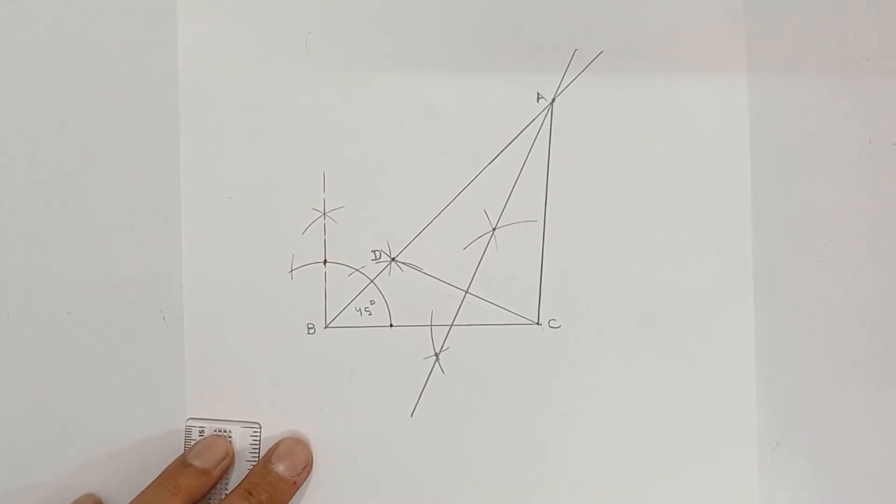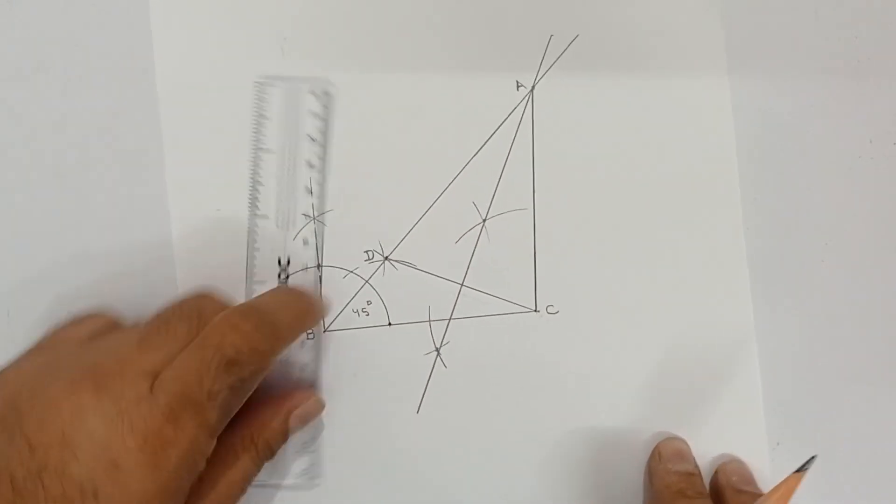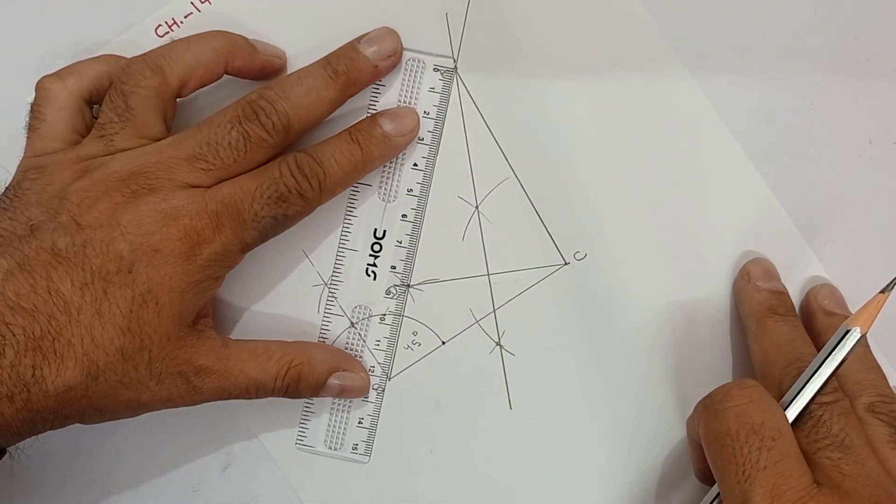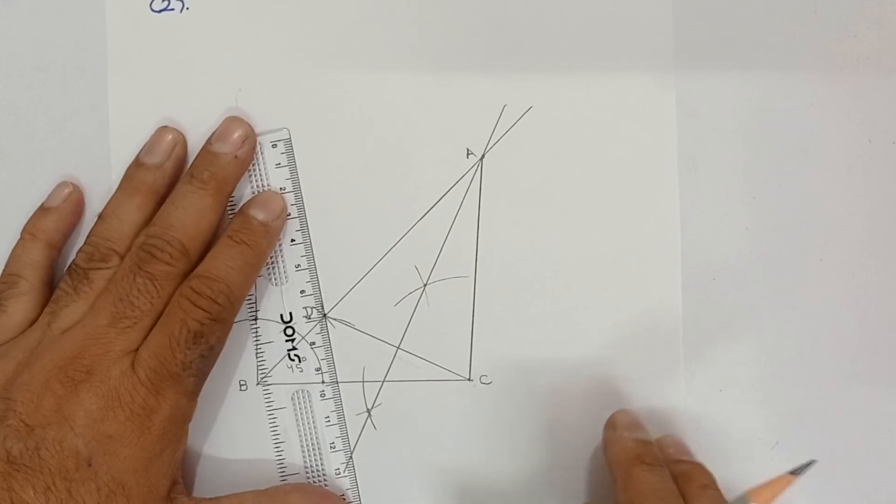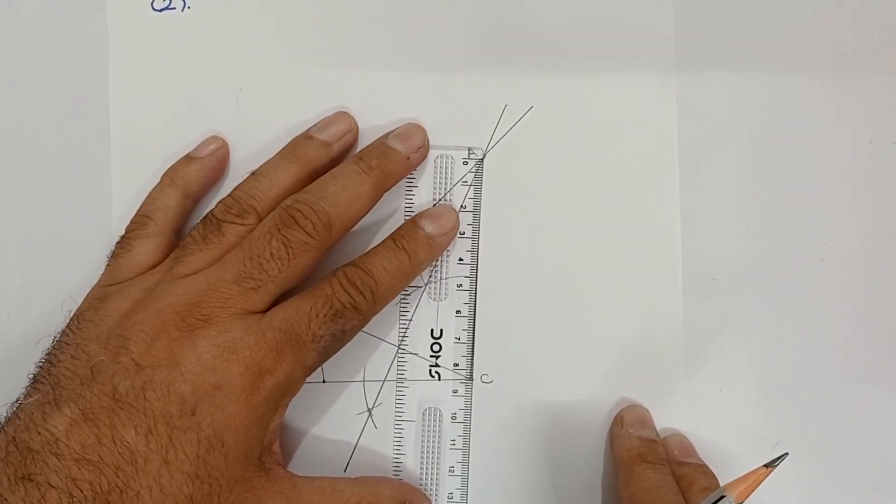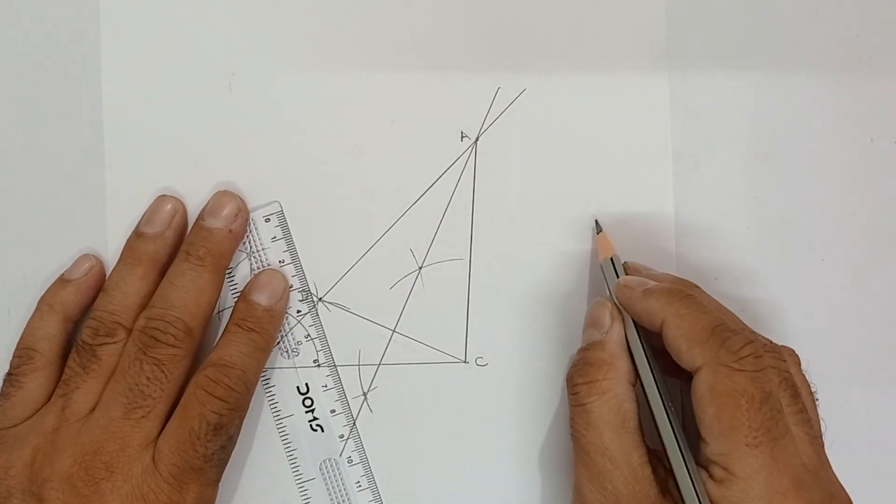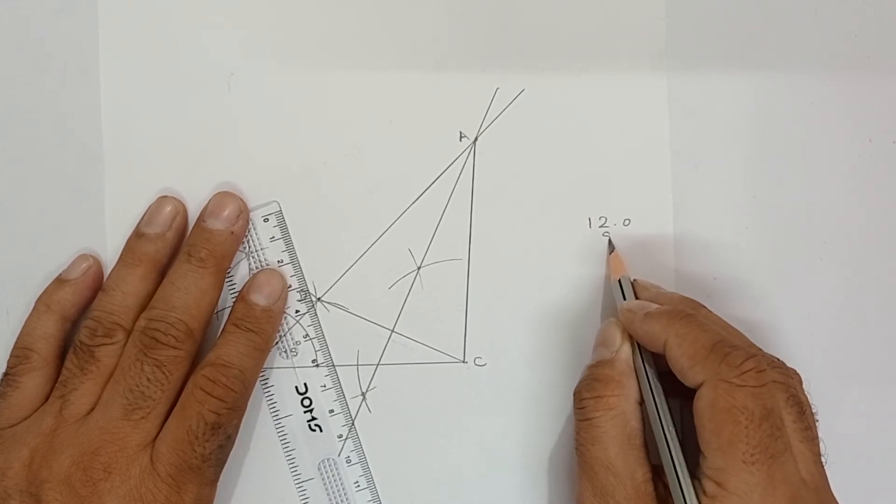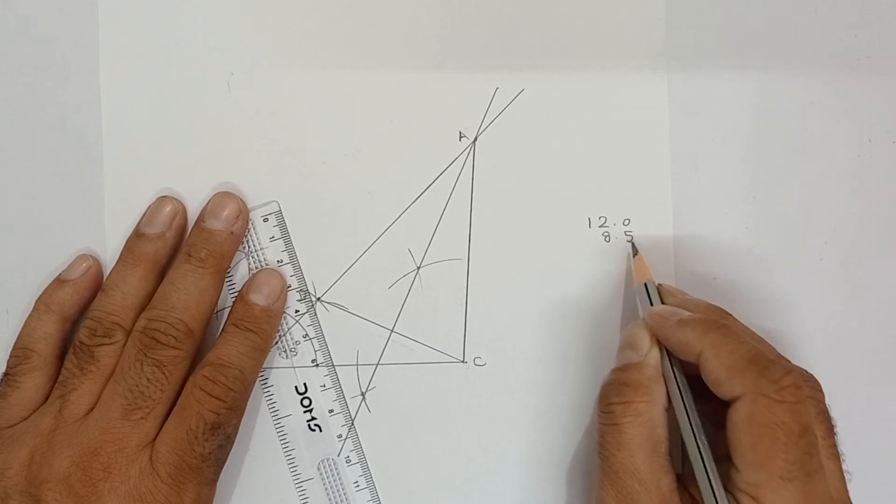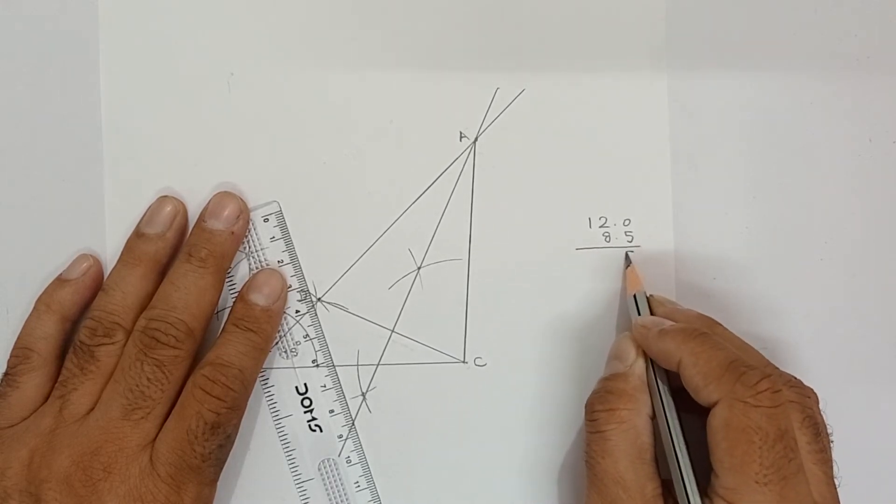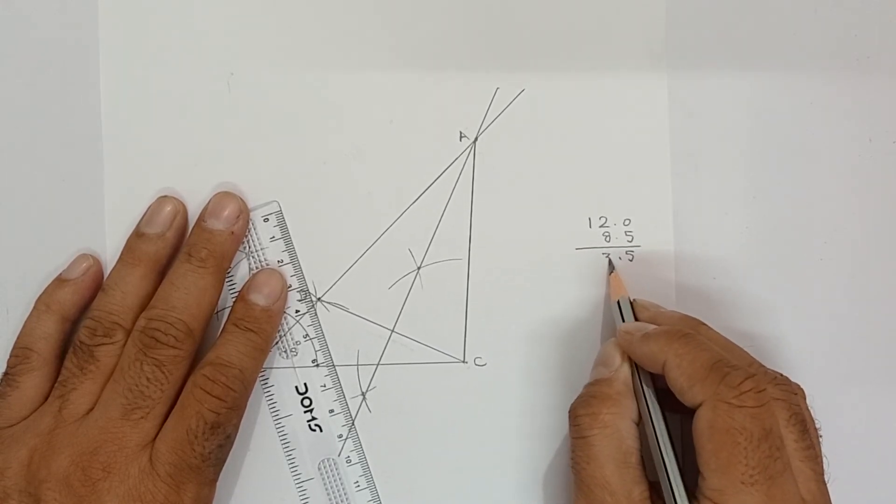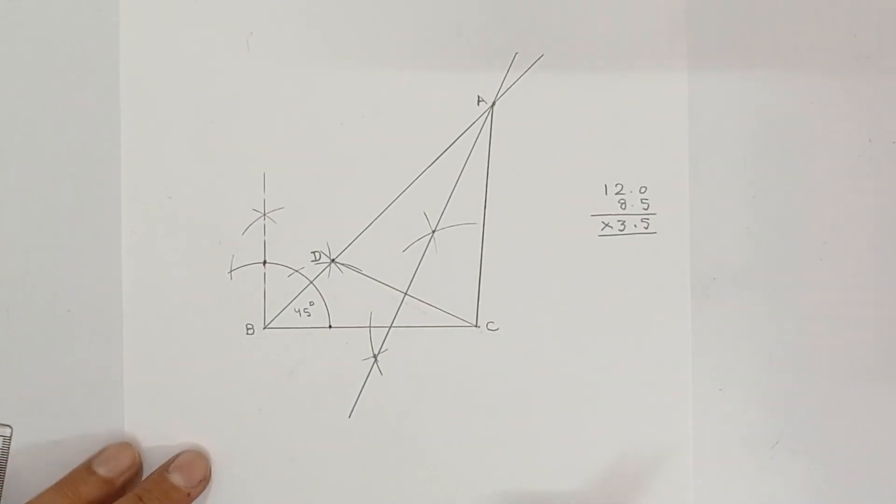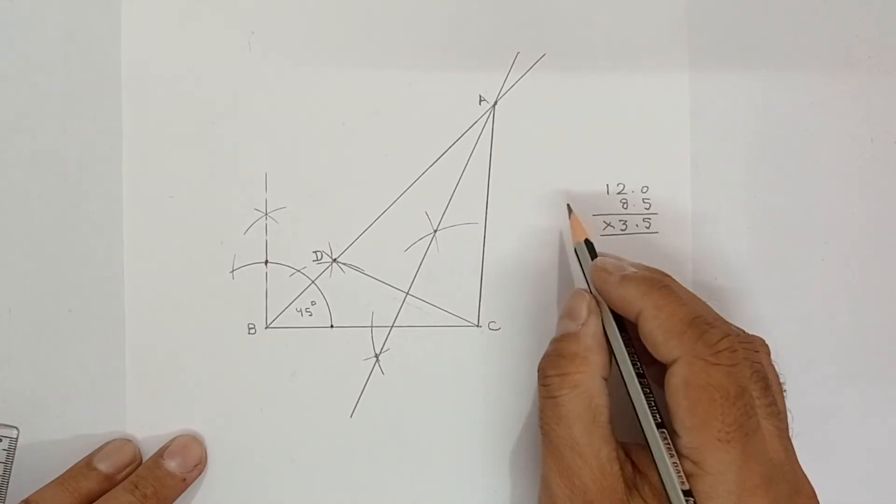Now check whether it was correct or not. Measure AB. It is 12. And then measure AC. It is 8.5. So, 12.0 minus in rough work 8.5 and see. 10 minus 5 is 5, 11 minus 8 is 3. So, you can see it has come 3.5 centimeter. This means your construction is absolutely correct.